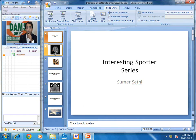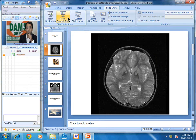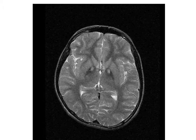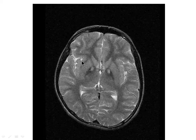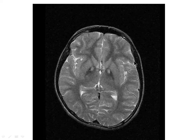The first case we want to see today is an MRI brain. Please look at this MRI image and tell me what sequence you think this is. This is an axial T2-weighted MRI image. This is a 14-year-old boy who presented with complaints of dystonia, and this T2-weighted MRI image is available to us.